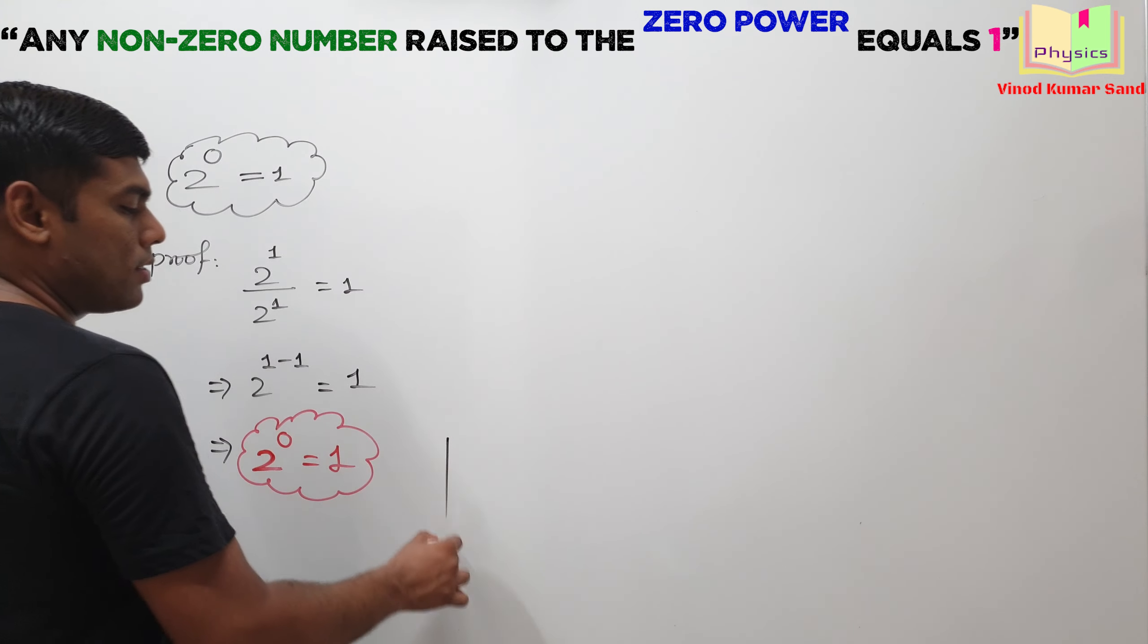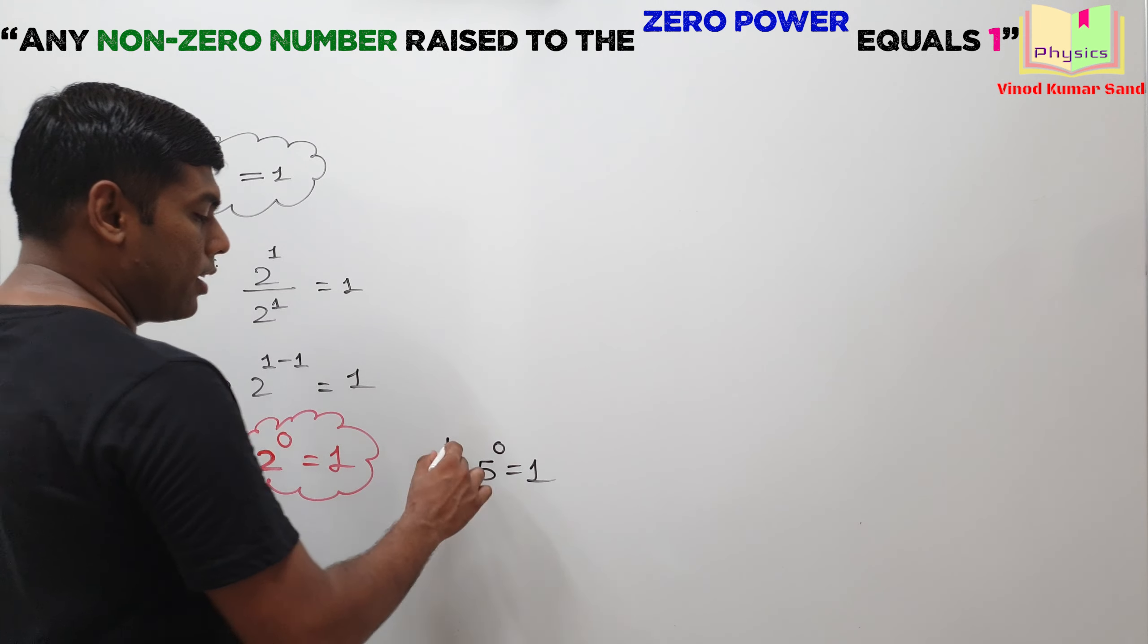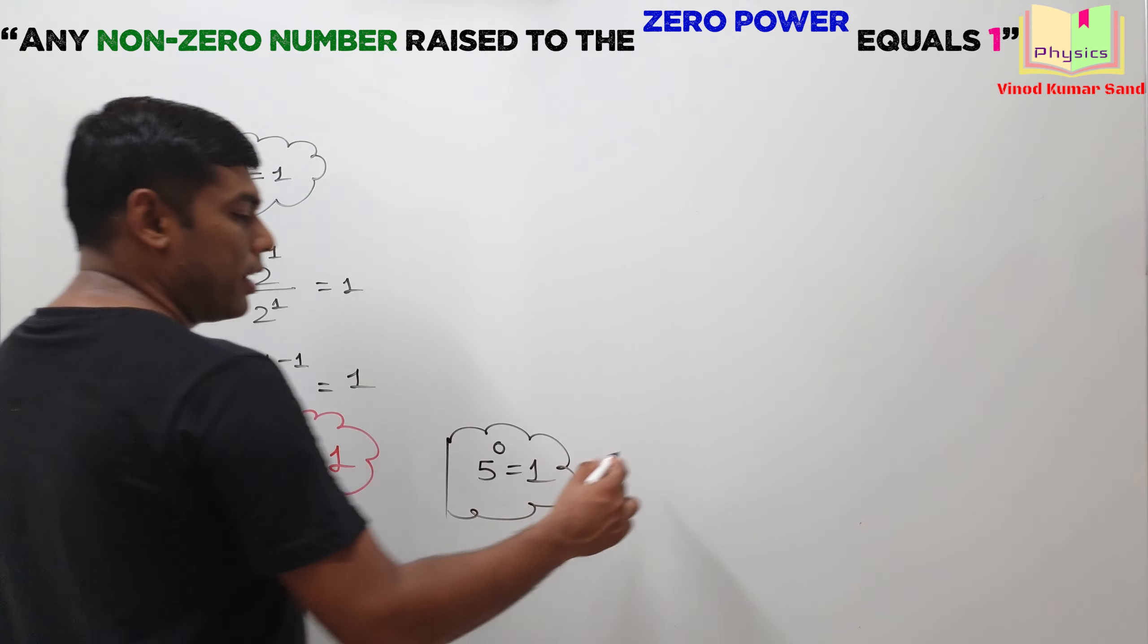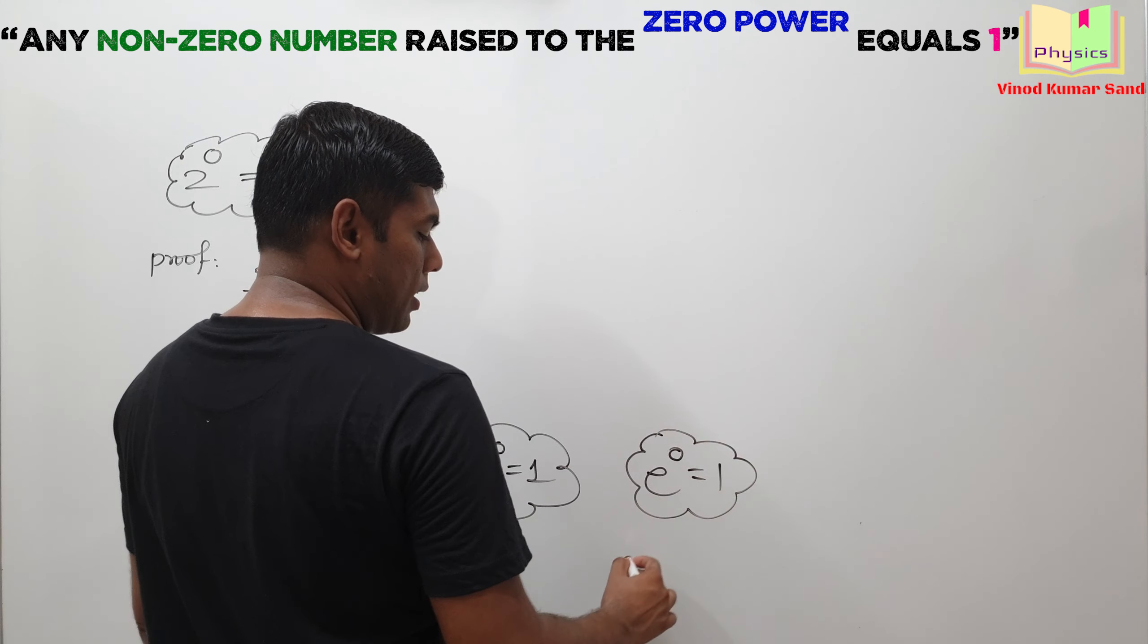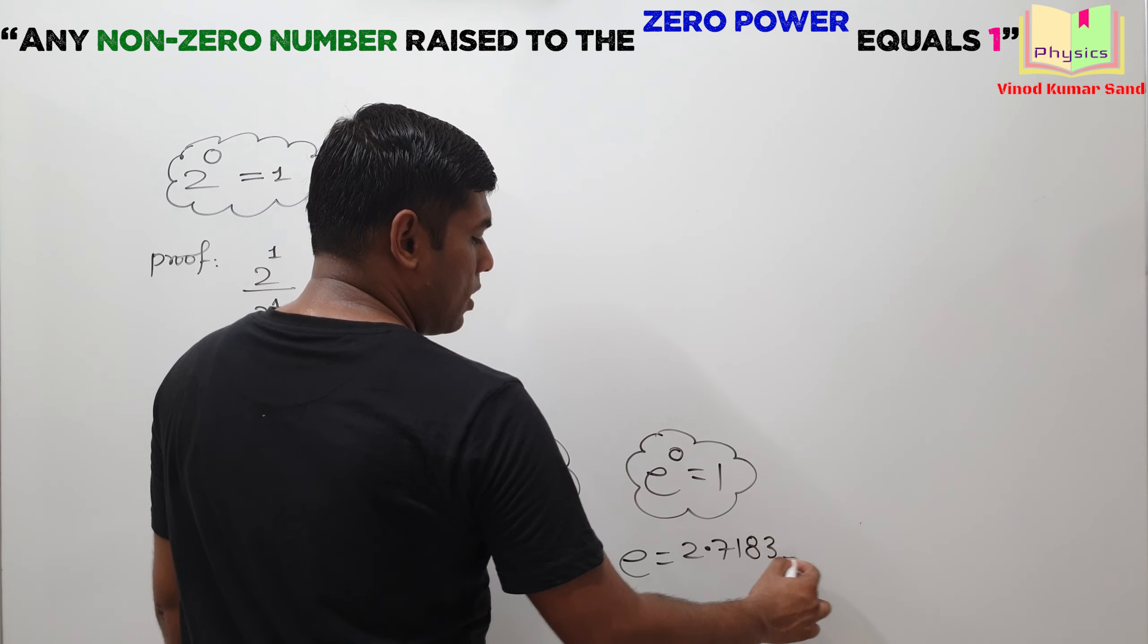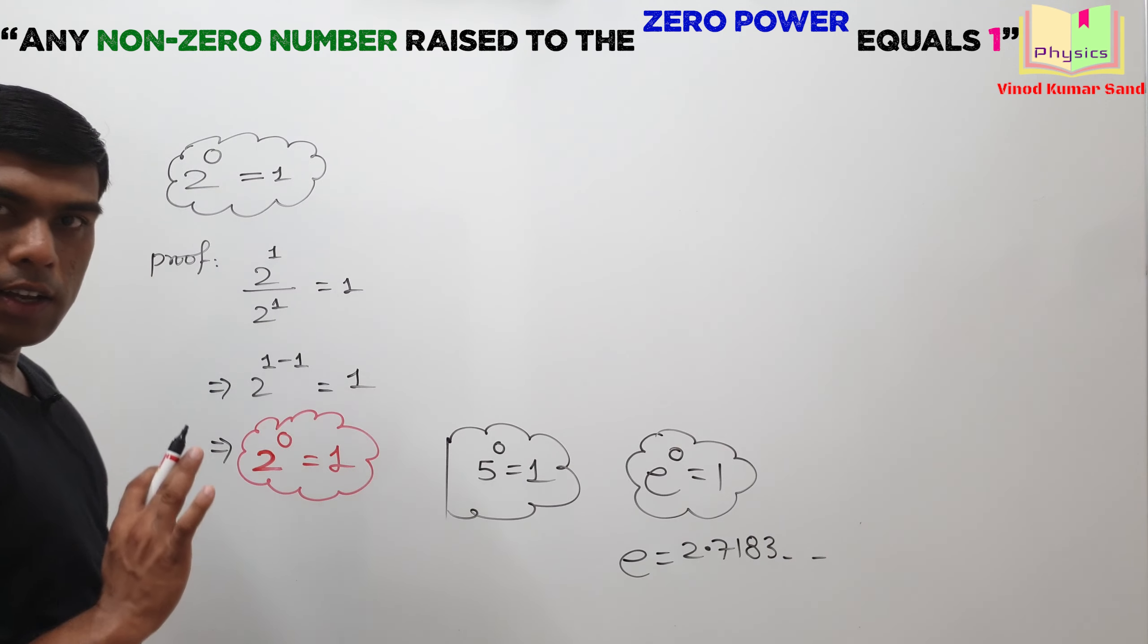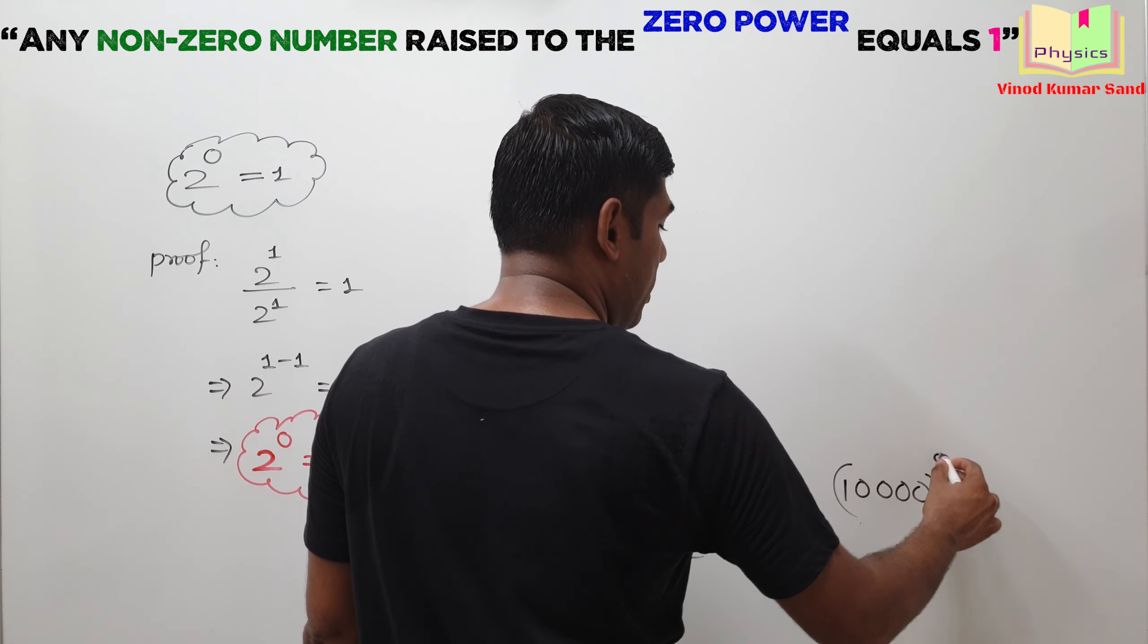For example, somewhere is written 5 to power 0, answer will be again 1. If you find e to power 0, answer will be 1. I hope you remember that e is equal to 2.7183 and so on. 10,000 to power 0, answer will be 1.